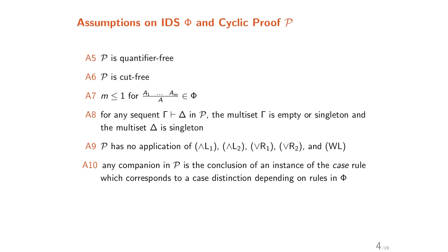The assumptions A5 to A10 on the inductive definition set phi and cyclic proof P are: P is quantifier-free and cut-free; each inductive definition has at most one premise (m is no more than 1); for any sequent gamma, delta in P, the multi-set gamma is empty or a single term and delta is a single term; P has no application of certain rules we do not yet handle; and any component in P is the conclusion of an instance of the case rule, corresponding to case distinction depending on rules in phi.